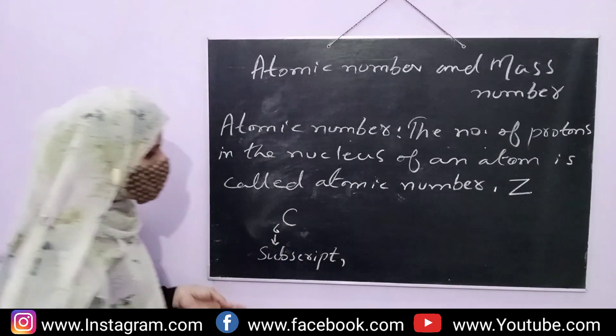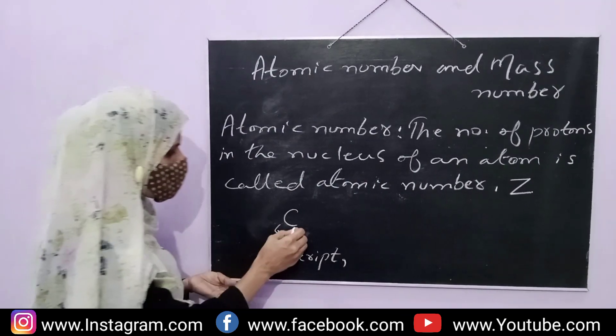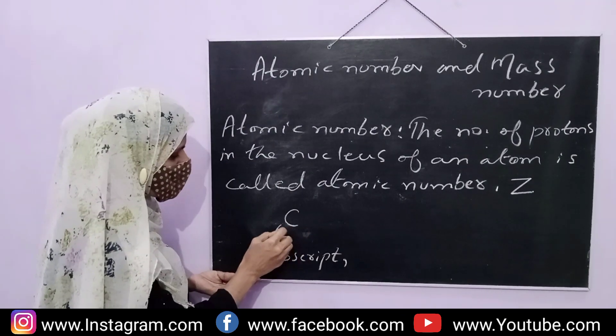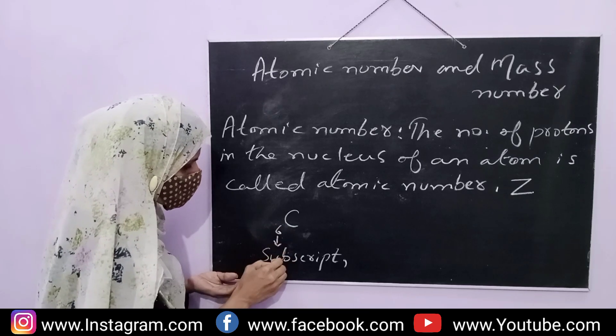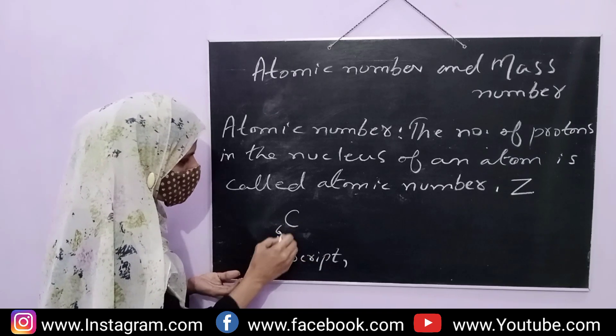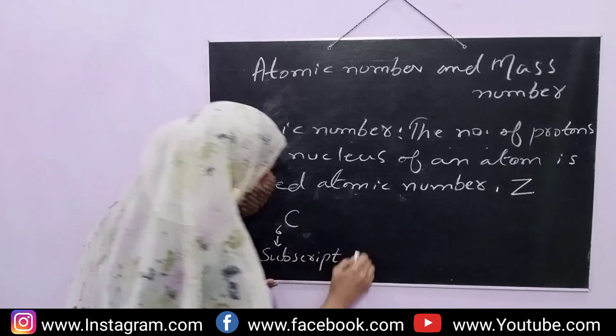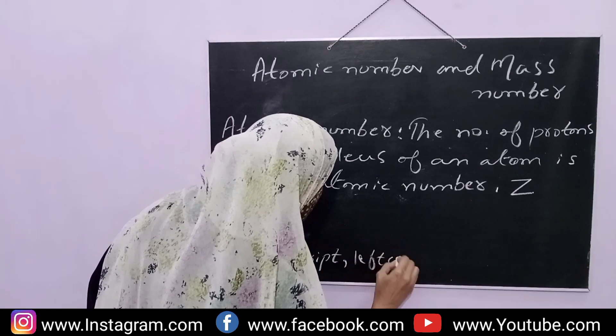For example, carbon has atomic number 6. This is the number of protons in the nucleus of an atom.